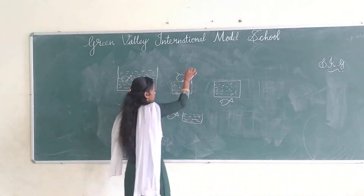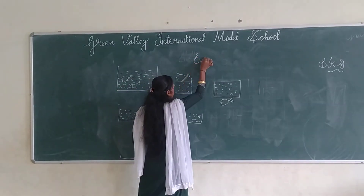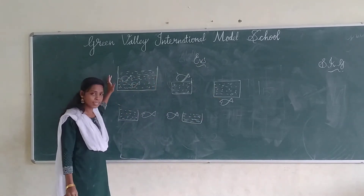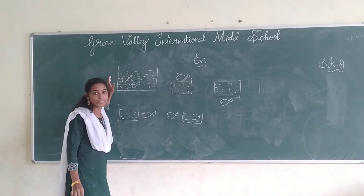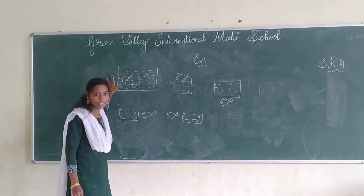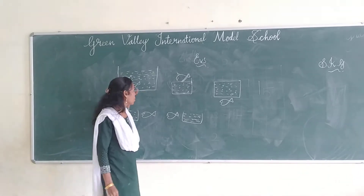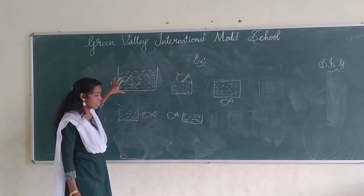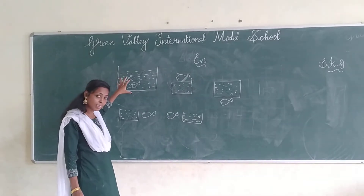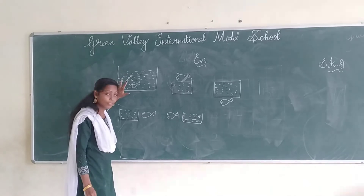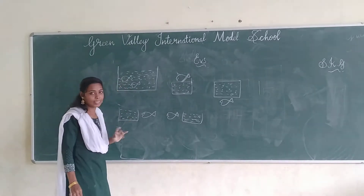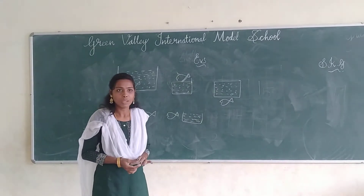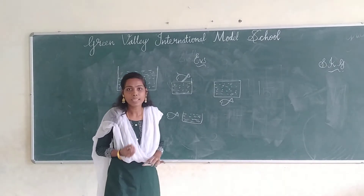So this is EBS. Students, what is this? It's a fish tank, right? This is a fish tank. So here, how many fishes are here? One, two — there are two fishes here, right? So this is a fish. Fish, and then we say fish.